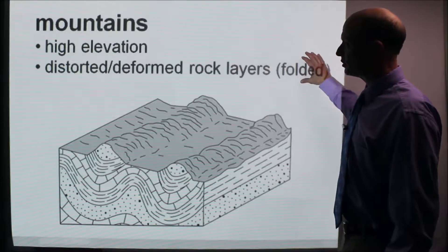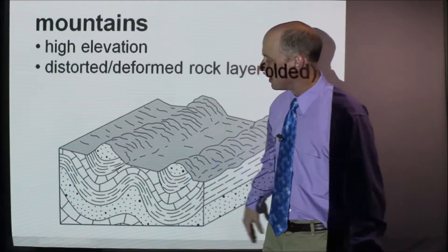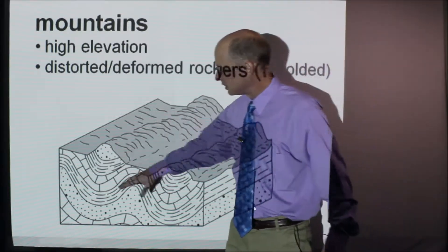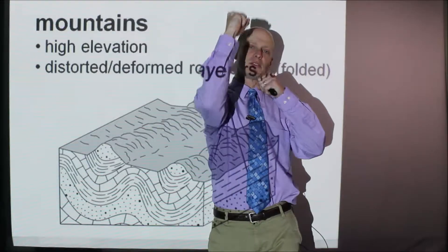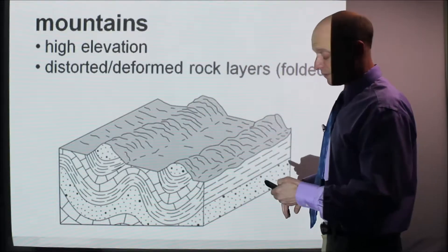So mountains are high elevation, but they have distorted and deformed rock layers, such as folding. In this case, we have folding here. So this would be mountains here. The rocks get folded, pushed together, thrust up. That is what we call mountains, which is different than a plateau.